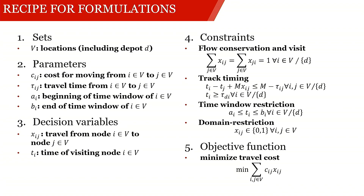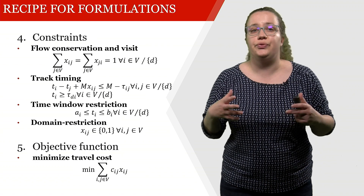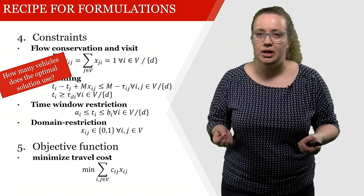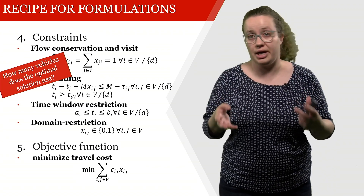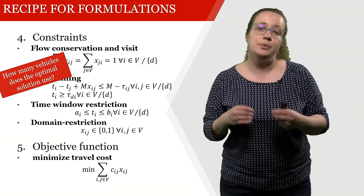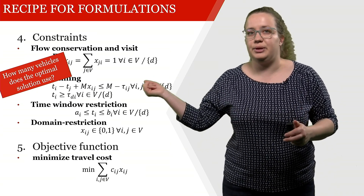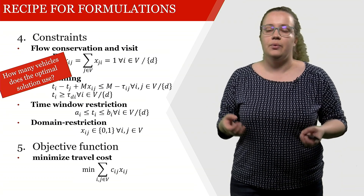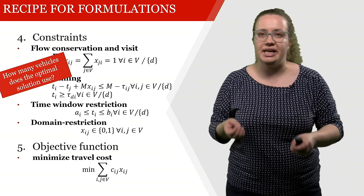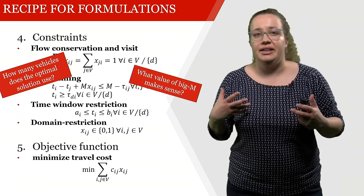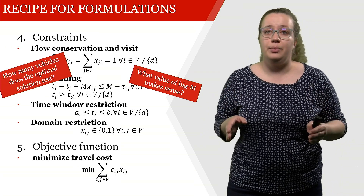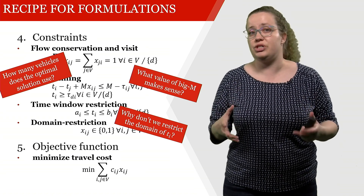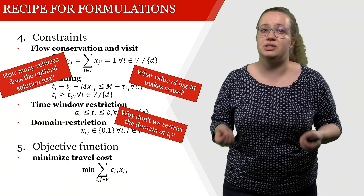We can use this model formulation to answer multiple additional questions. First of all, we can ask: how many vehicles does this optimal solution use? So if we solve this using Gurobi or any other off-the-shelf solver, how many vehicles do we actually utilize? Secondly, if we look at this mathematical formulation — in particular this one constraint — we see that we use a big M. Whenever we use a big M, the immediate question is: which value of big M makes sense? And then usually we learn that we always have to restrict the domain of a decision variable, but in this case we actually don't restrict the decision space of T. Why is this the case?